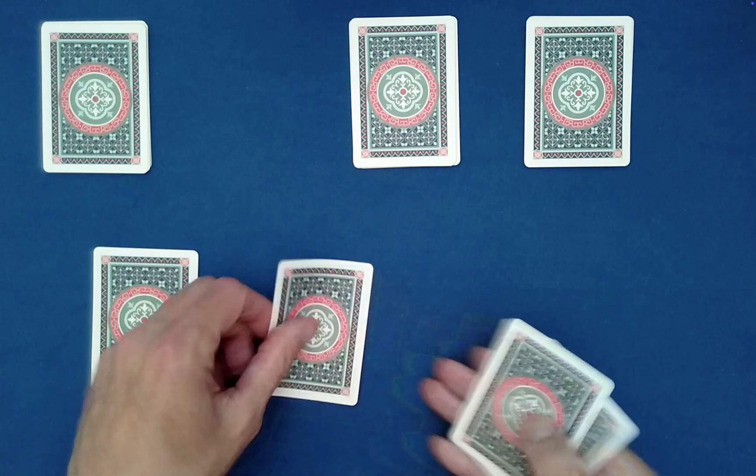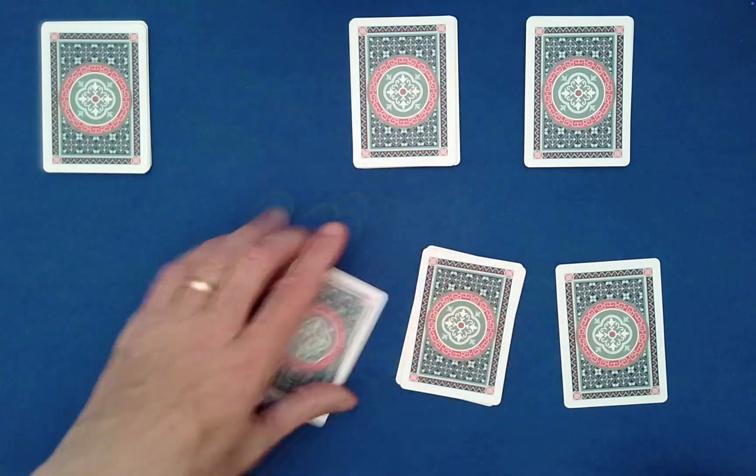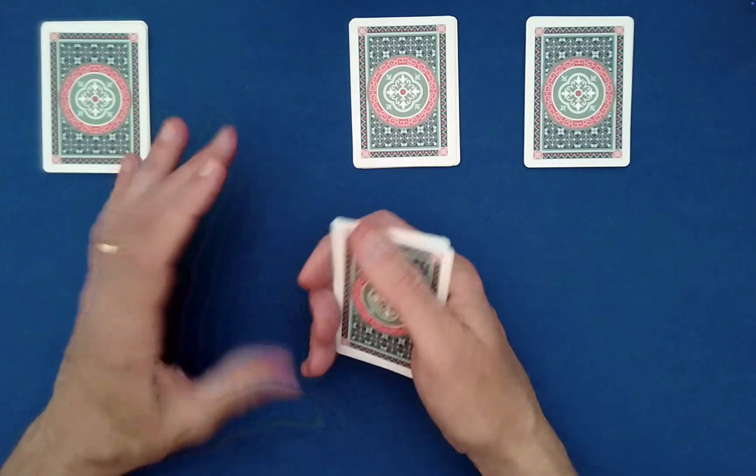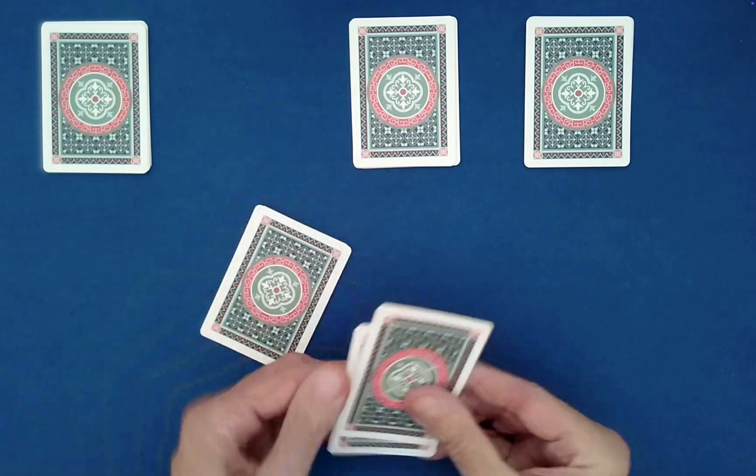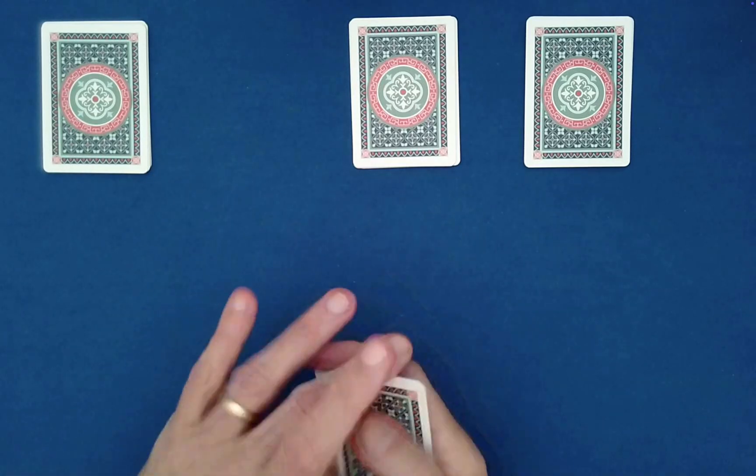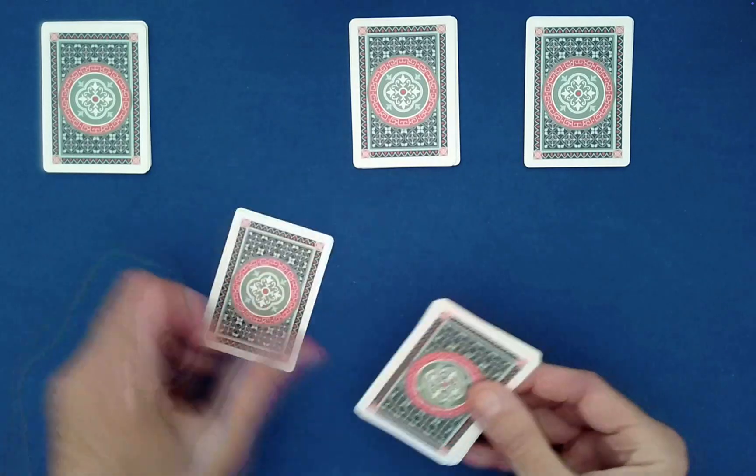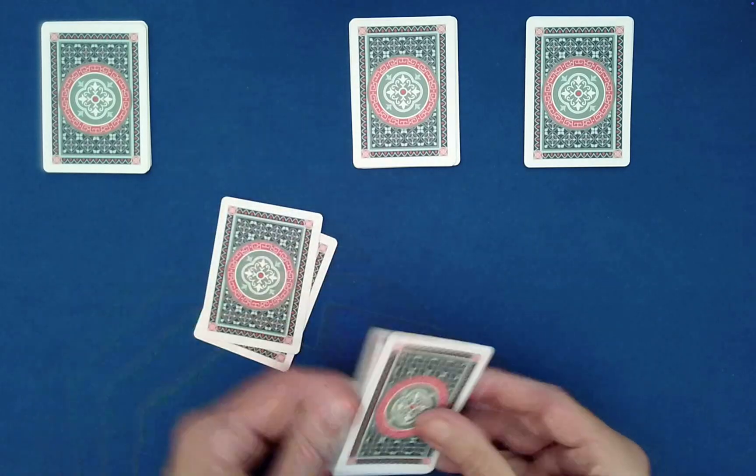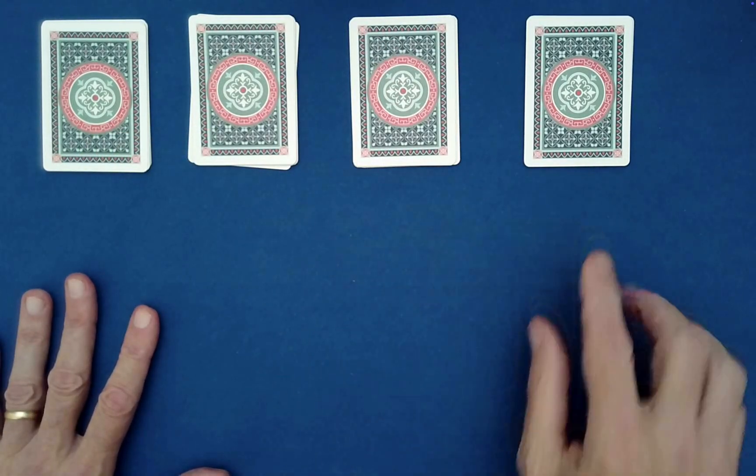Would you like to do a down-under? No? What next? This one right here? Four piles again, left to right leapfrog? We can do that. A down-under? That's fine. Down, under, down, under, down, last one goes on top. Any others? A second down-under? Down, under, down, under, down, last one goes on top.